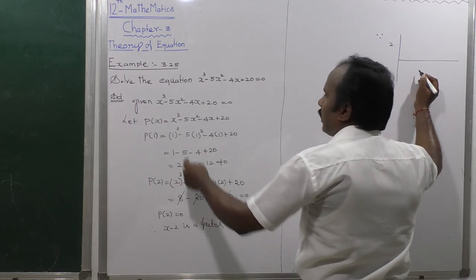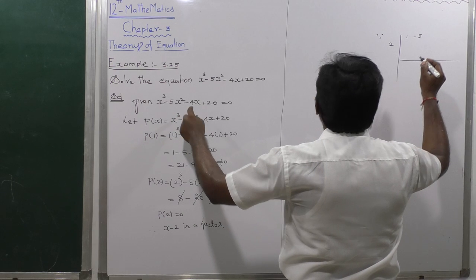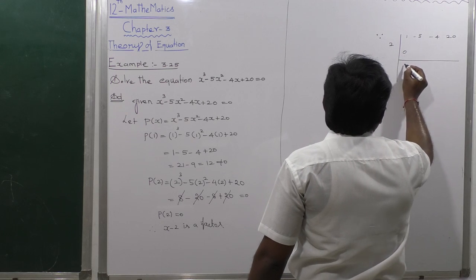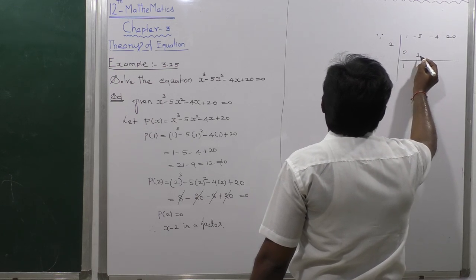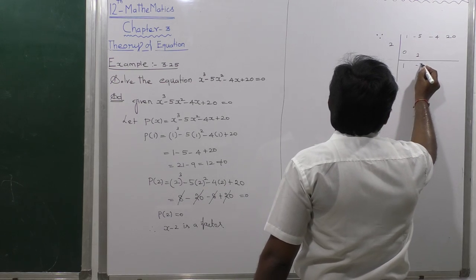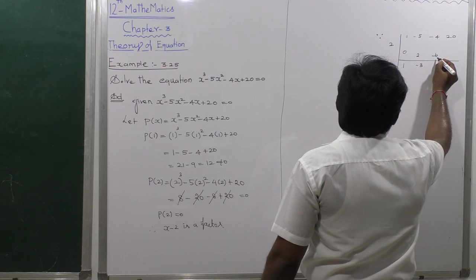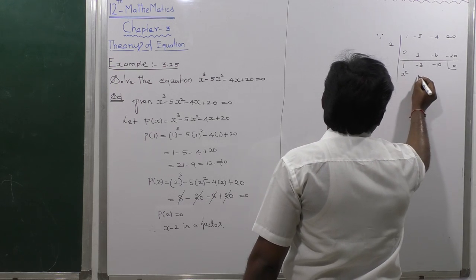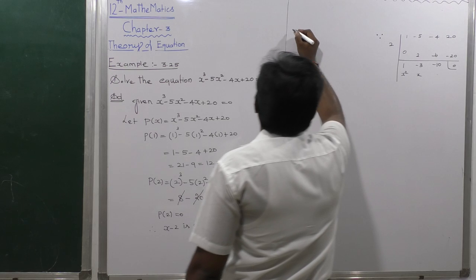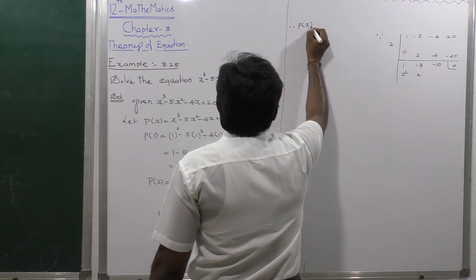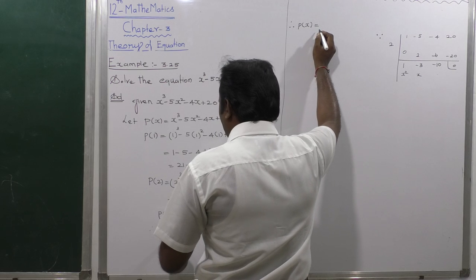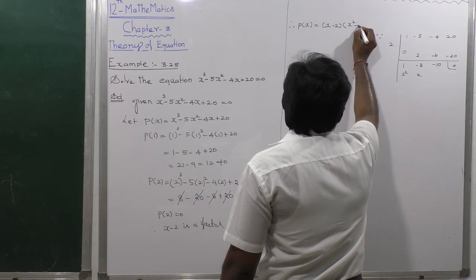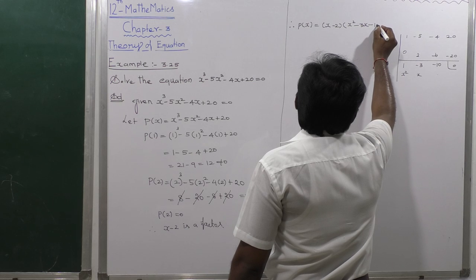Performing synthetic division with x = 2 on coefficients 1, minus 5, minus 4, plus 20. The result gives: bring down 1, then 2, giving minus 3; then minus 6, giving minus 10; then minus 20, giving 0. So P(x) equals (x minus 2)(x squared minus 3x minus 10).